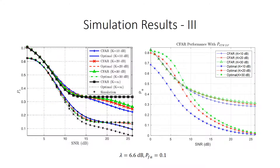The probability of error is assessed with different two-wave diffuse power fading environments, comparing the conventional CFAR system to the paper's proposed optimal value determination. The performance in the paper's figure indicates that the optimal value outperformed the CFAR approach at every level of SNR, whereas the MATLAB simulation indicates they are particularly close. At higher signal-to-noise ratio values, however, the optimal value still outperforms the CFAR approach.